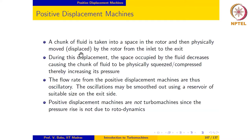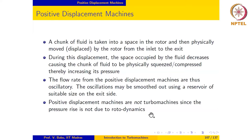Since a chunk of fluid is taken, compressed, and then sent out, the flow rate from positive displacement machines generally tends to be oscillatory, but the oscillations may be smoothed out using a reservoir of suitable size on the exit side, and that is usually done. Positive displacement machines are not turbomachines since the pressure rise of the fluid is not due to rotor dynamics but rather by physical compression of the fluid. They are widely used for pumping liquids, although designs for compressing gases are also available.